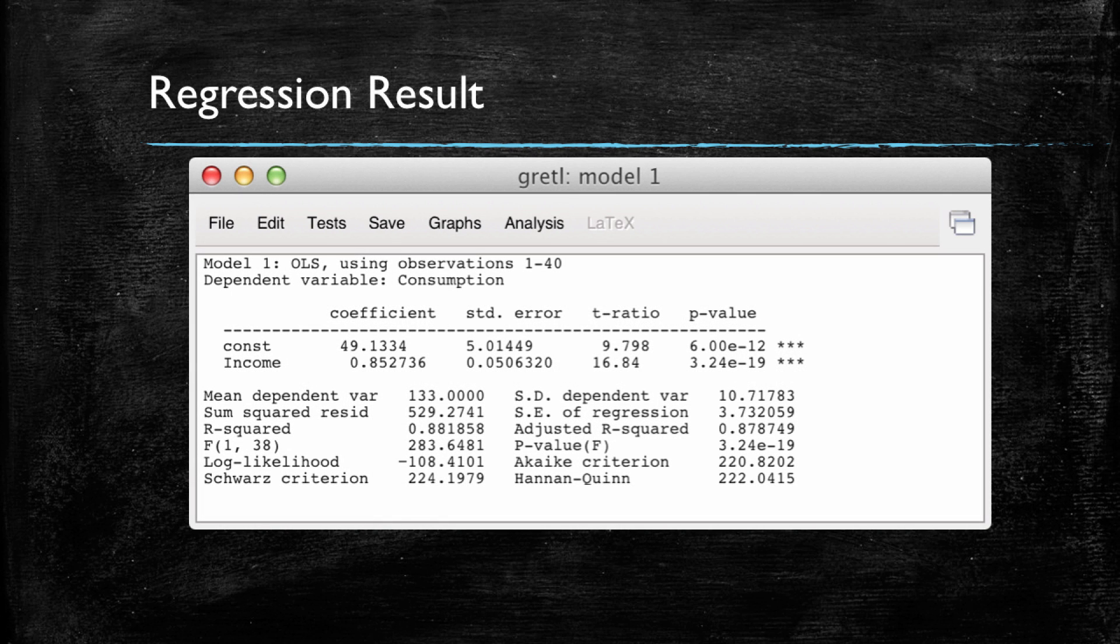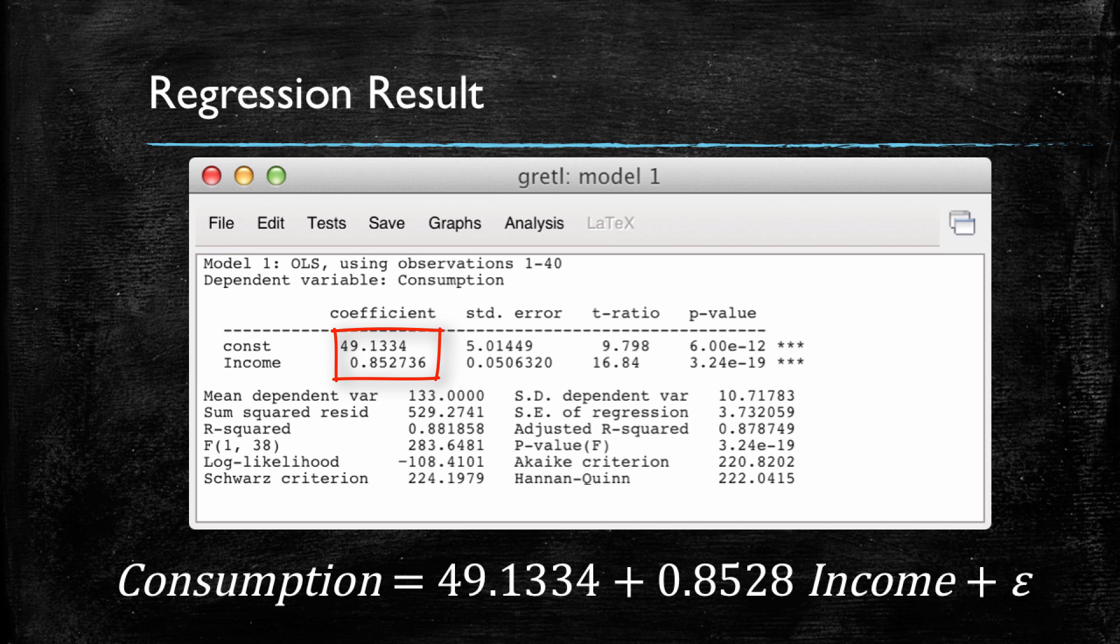We had already ran a regression in which we had estimated the intercept and the slope of a model and concluded that for every $100 of income on average, we would expect consumption to grow by $85. And we obtained this by multiplying a given income by the slope coefficient.